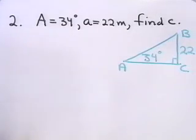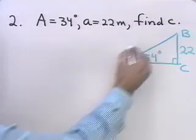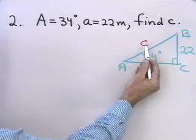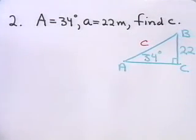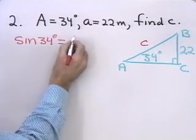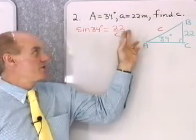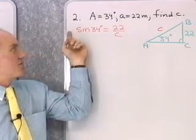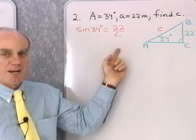Here I have angle A, the side opposite, and I'm looking for the hypotenuse. The trigonometric ratio relating those is the sine function. So the sine of 34 degrees equals 22 divided by C. To solve for C, I multiply both sides by C, then divide both sides by sine 34, giving C equals 22 divided by sine 34.